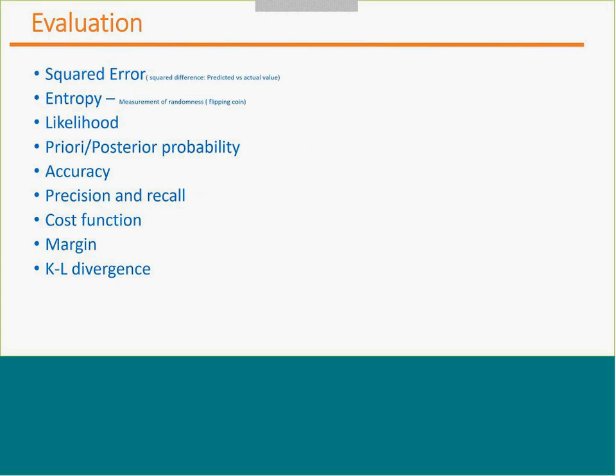The second component was evaluation. For that we have a couple of things — for example, squared error, entropy, prior and posterior probability, and cost function. We are going to see squared error today, and if possible, prior and posterior probability as well.